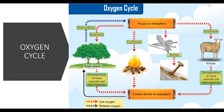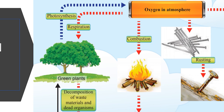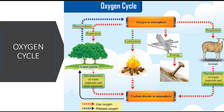The oxygen required for respiration, combustion, rusting, and decomposition is produced during photosynthesis, and the oxygen produced will be returned to the air. In other words, there are four processes that withdraw oxygen from the air — namely respiration, combustion, rusting, and decomposition — and only one process, photosynthesis, will return oxygen back into the air.